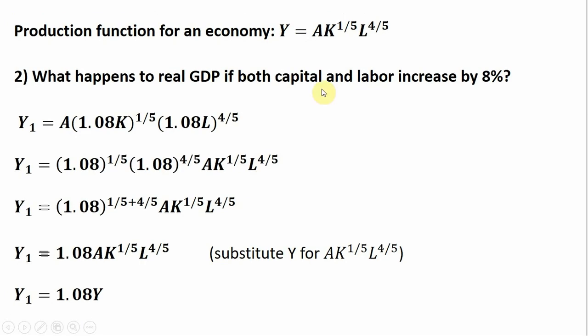Let's do another example. Here, we're changing these exponents slightly. They still sum to one, so this is still constant returns to scale. This time, let's ask what happens if we increase both capital and labor by 8%. 1.08 times K increases the capital stock by 8%, and 1.08 times L increases labor by 8%.